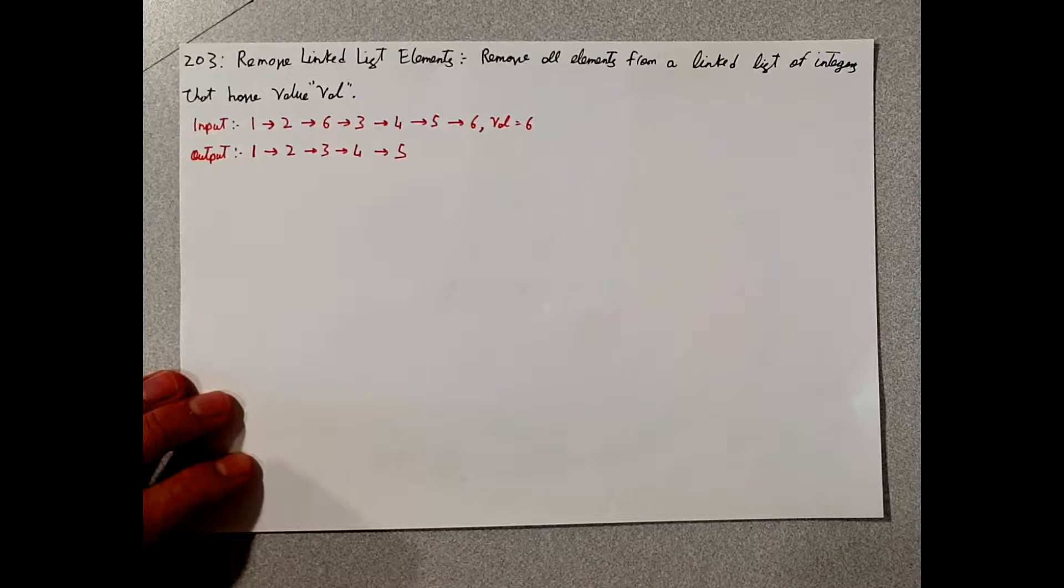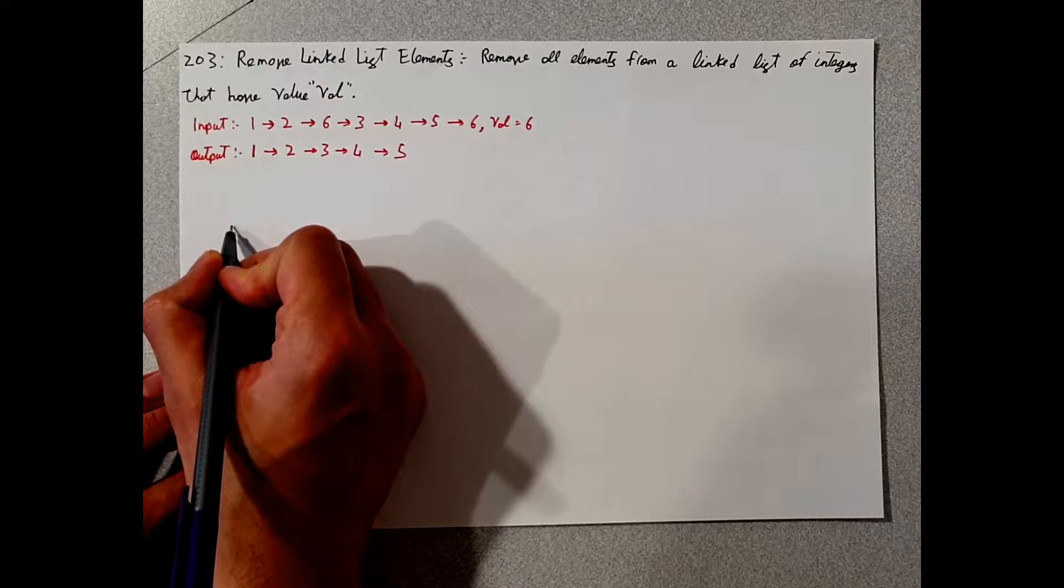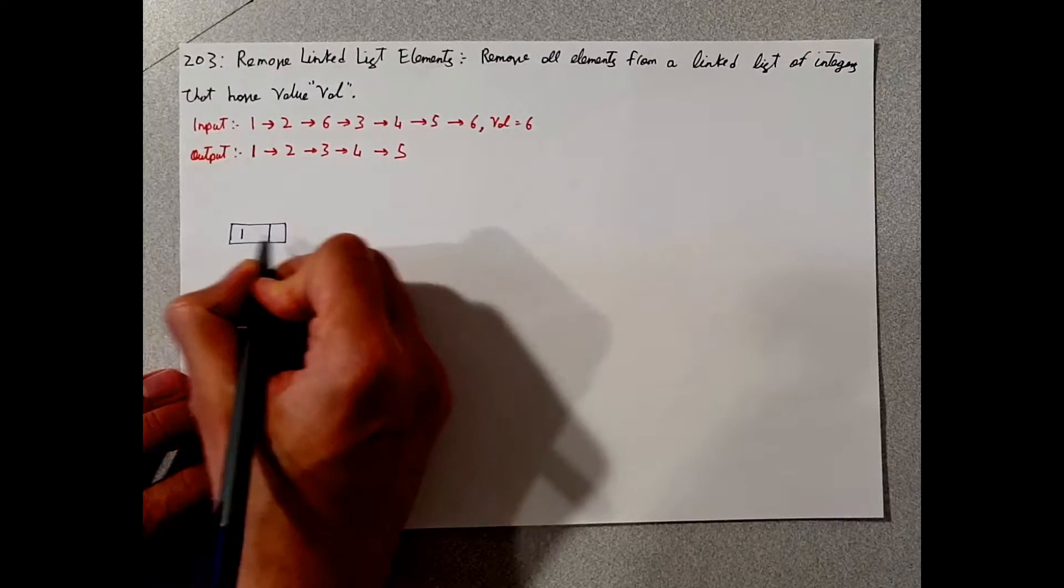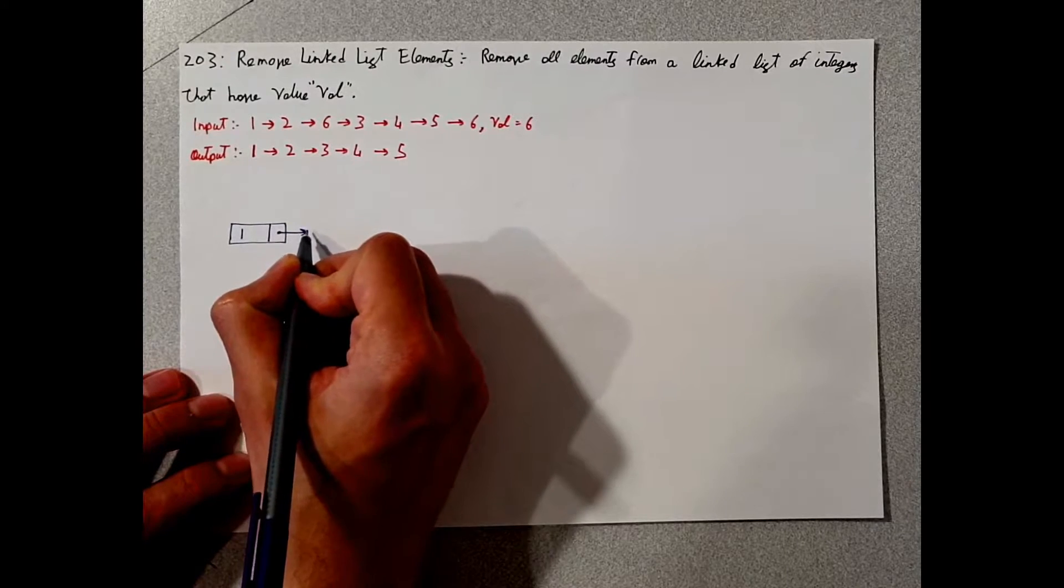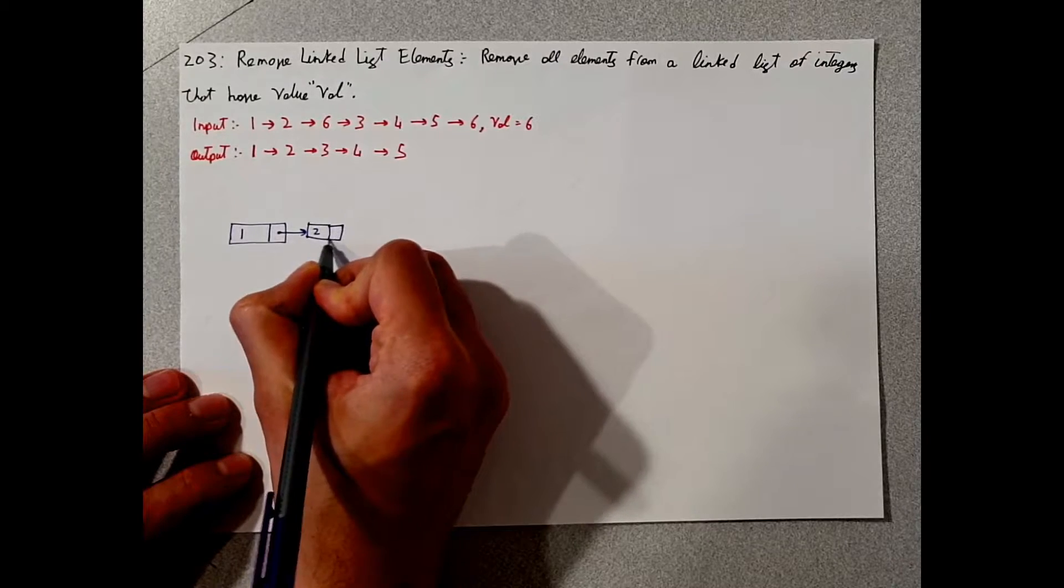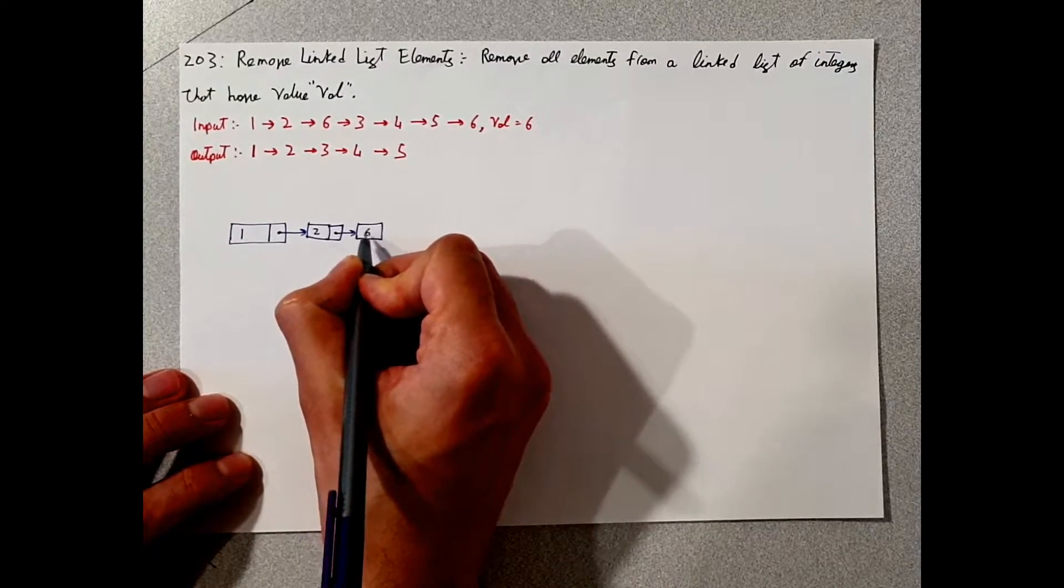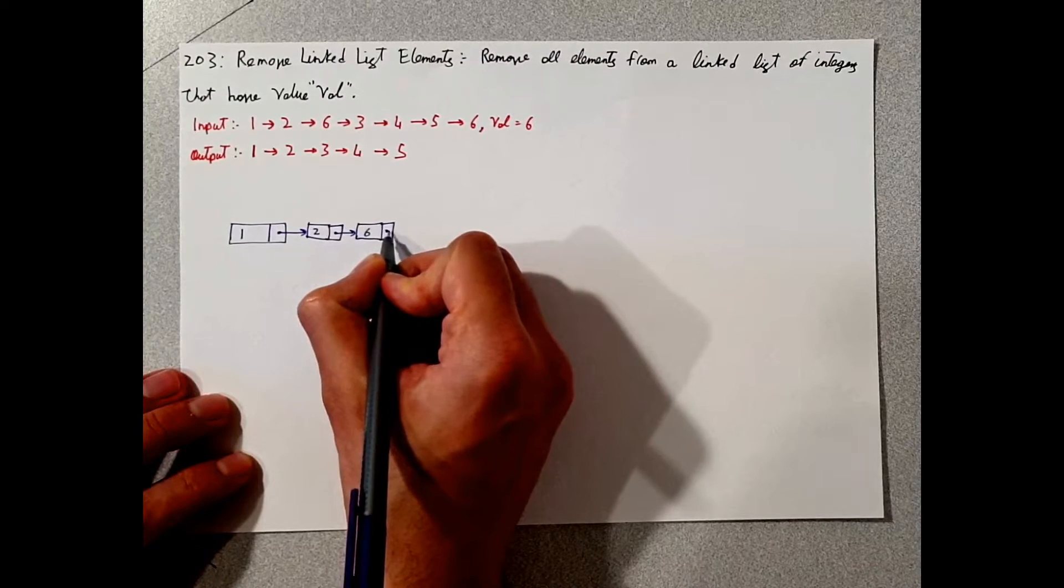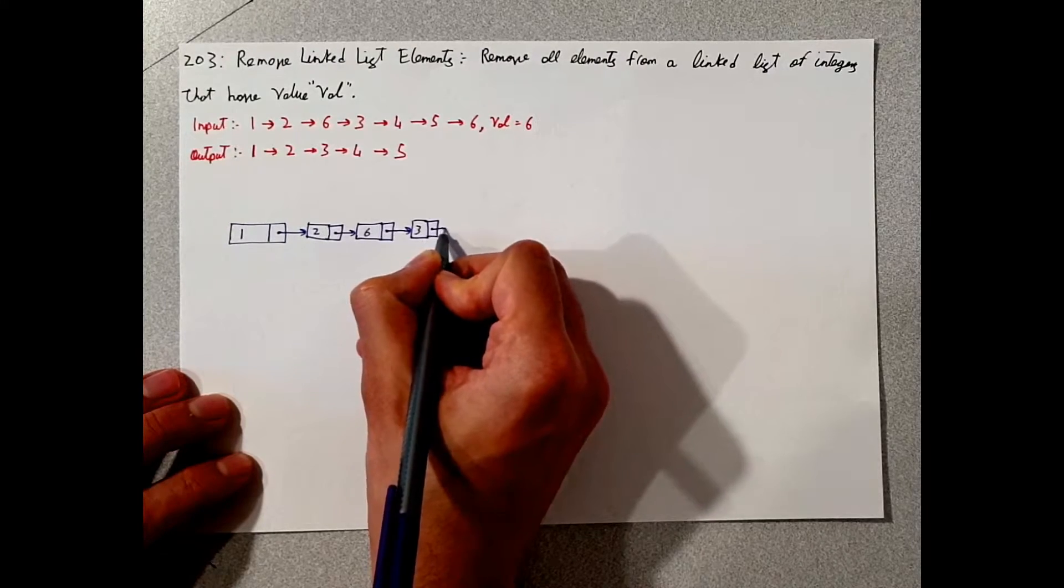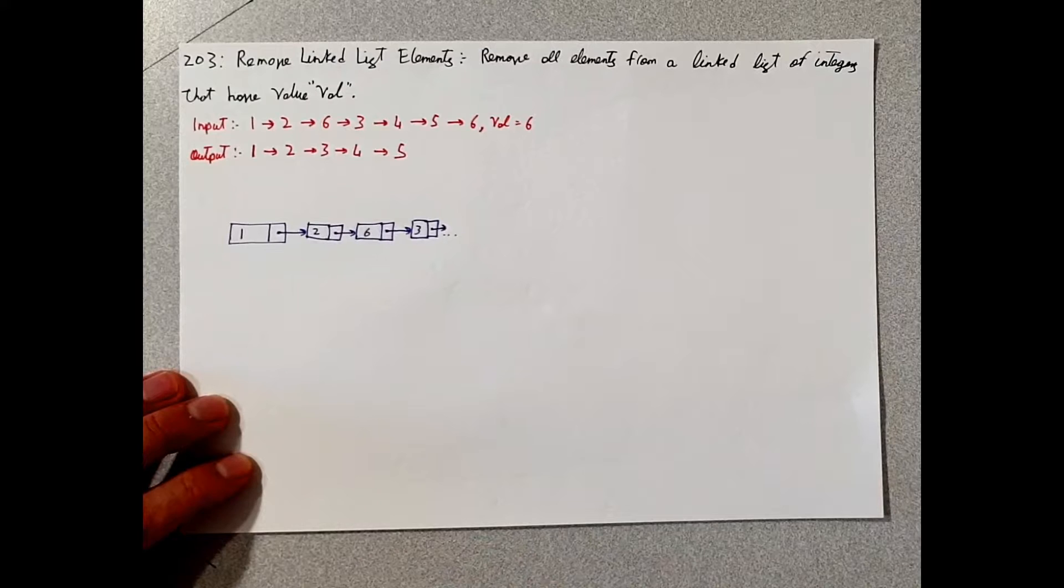So the first thing we do is let us imagine this. A linked list will look something like this, with this pointing to 2, this pointing to 6, this pointing to 3, and so on and so forth. I wouldn't draw the whole thing just to save up space to write the code.